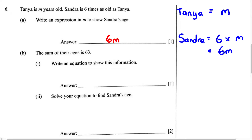Now for part B, it says the sum of their ages is 63. The first part of B says write an equation to show this information. I just want to explain something: when you see the word expression, we're not going to have an equal sign. But when we see the word equation, we're going to have an equal sign.